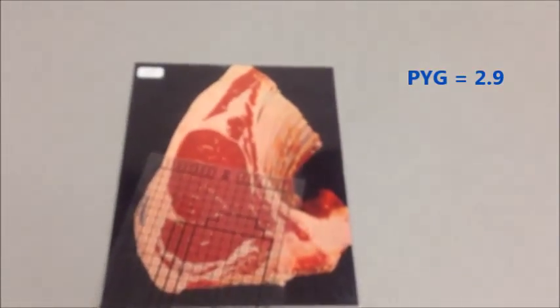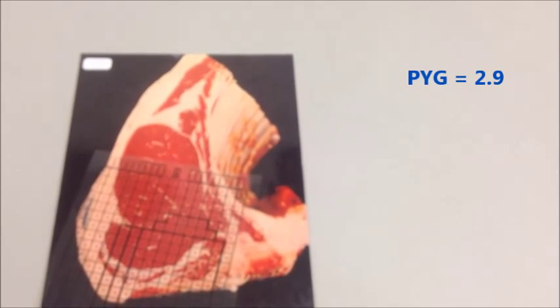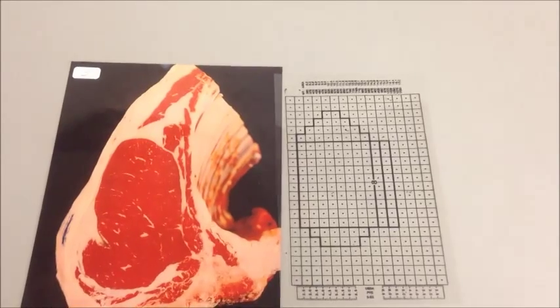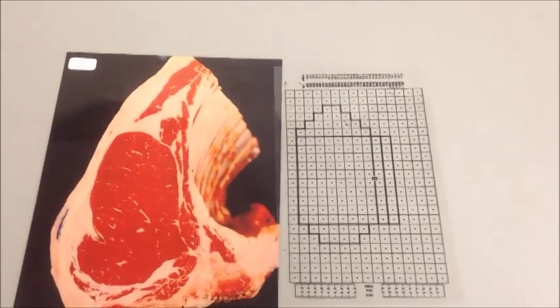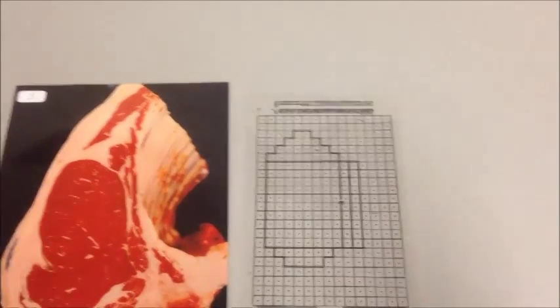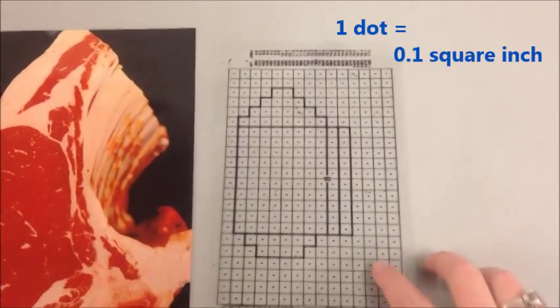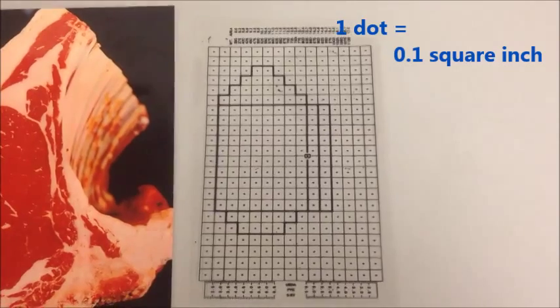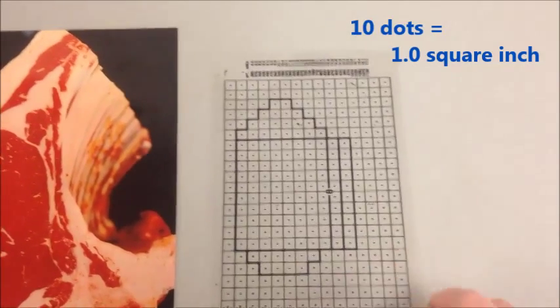That 2.9 is your preliminary yield grade, or PYG, and it's the starting point for your yield grade equation. So we're going to start this carcass out at a 2.9. To calculate the size of a ribeye, you need to use a grid like this — it's just a clear piece of plastic with a grid printed on it. Each dot on the grid counts as one-tenth of an inch, so if you count ten dots that's one square inch. You're counting dots, not squares.